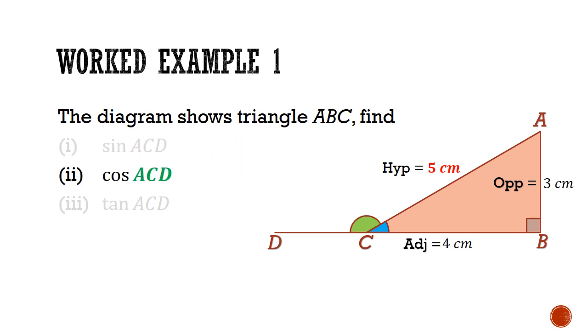In part 2, cosine of the obtuse angle ACD is equals to negative cosine of the acute angle ACB. And this will give us negative 4 over 5.